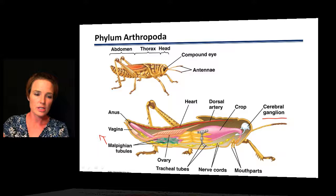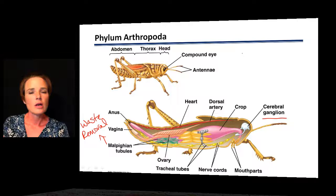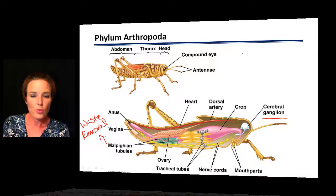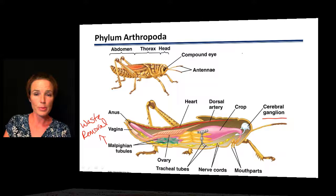Another thing unique to insects is the tracheal tubes. These are branching tube networks that carry oxygen throughout the insect's body. They open directly to the outside using pores that can open and close, and those pores are called spiracles.